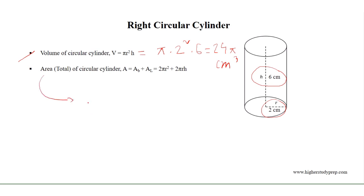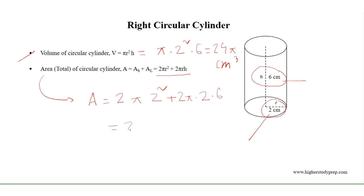The total area of the circular cylinder equals 2 pi r squared plus 2 pi r h, where r equals 2 centimetres and h equals 6 centimetres. So the area equals 2 pi times 2 squared plus 2 pi times 2 times 6, which equals 2 pi times 4 plus 12, resulting in 32 pi square centimetres.